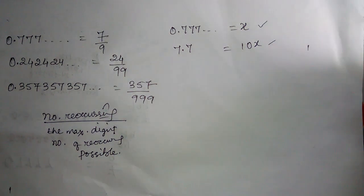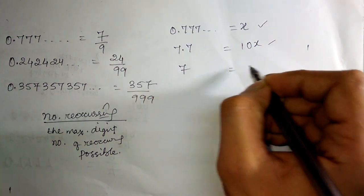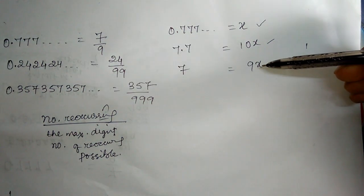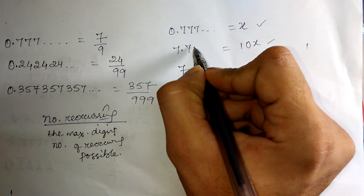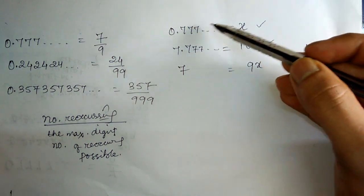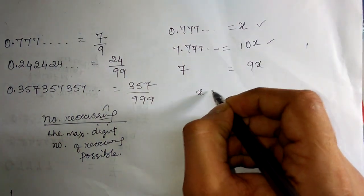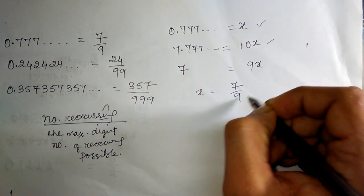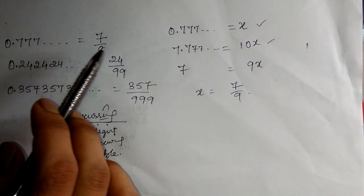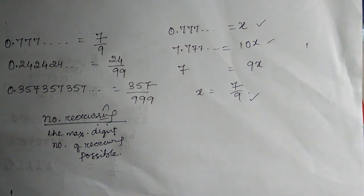Now subtract the first equation from the second: 10x minus x equals 9x, and 7.777... minus 0.777... becomes 7. So 7 equals 9x, which gives x equals 7 by 9. So we saw how it is solved, and we can directly write the answer.